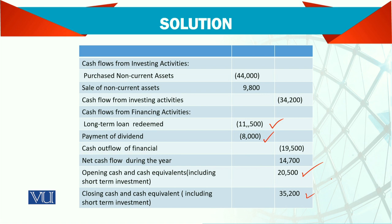Sometimes we prepare a separate statement showing cash and cash equivalents at the beginning and at the close. We add that total and find out the closing balance. It should agree — if you look at the balance sheet, you will find cash and investments together, and if you add them, you get 35,200.